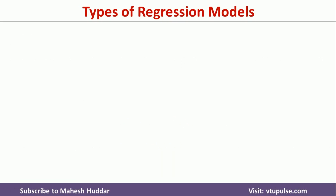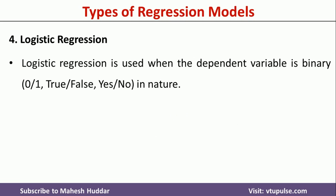The last regression model is logistic regression. Logistic regression is used when the dependent variable, that is the output variable, is binary in nature — for example, 0 or 1, true or false, yes or no type. Then we use logistic regression in this case.